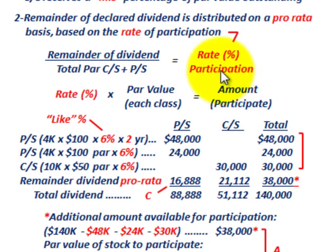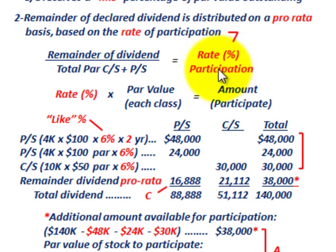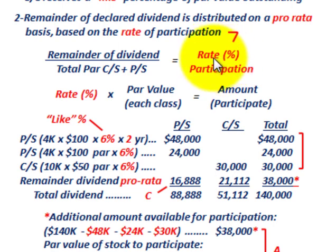That covers our basic example on dividend preferences and how to determine the dividend allocation between preferred stock and common stock when there is no specific agreement on how the dividends would be allocated.